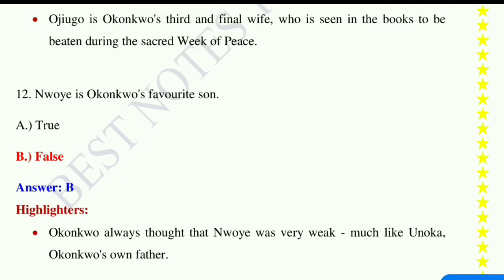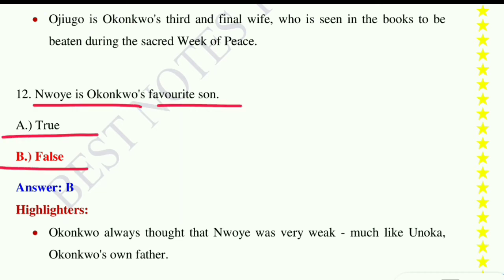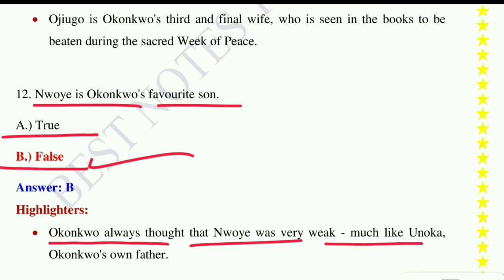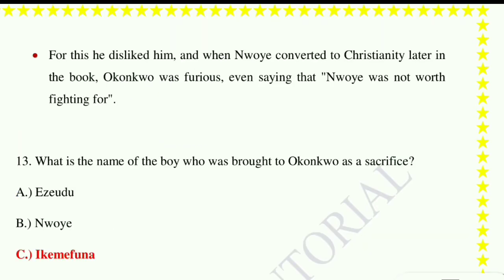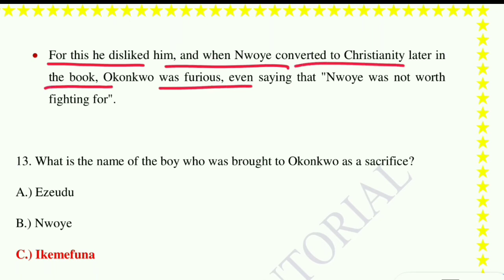True or False: Nwoye is Okonkwo's favourite son. This is false. Okonkwo always thought Nwoye was very weak, much like Unoka, Okonkwo's own father. For this reason he disliked him, and when Nwoye converted to Christianity later in the book Okonkwo was furious, even saying that Nwoye was not worth fighting for.